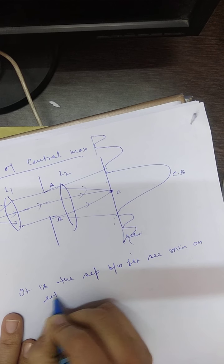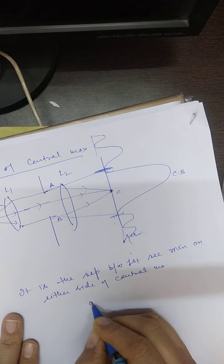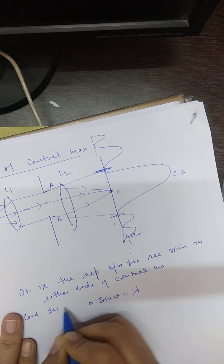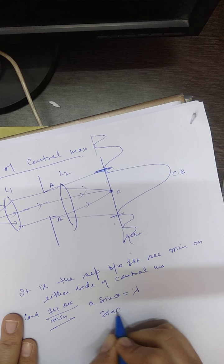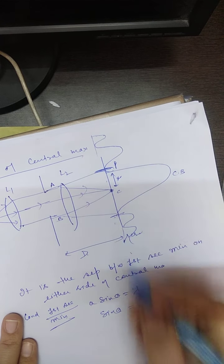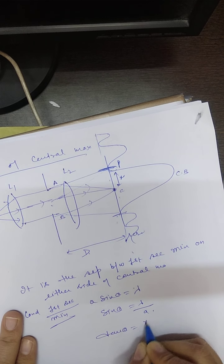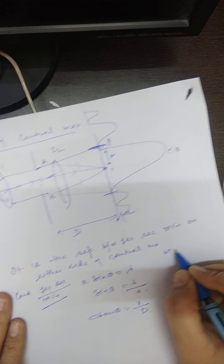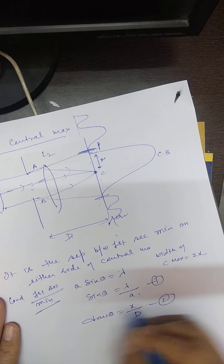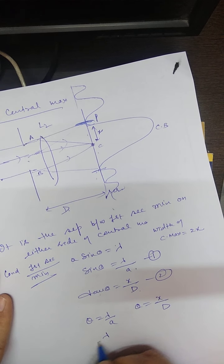The condition for the first secondary minima is: a sinθ = λ, so sinθ = λ/a. At point P, θ = λ/a and also θ = x/D, so λ/a = x/D.